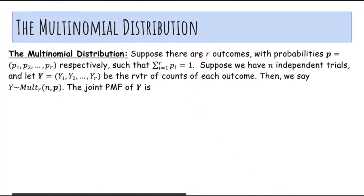Anyway, so in general, suppose that there are outcomes with these probabilities that add up to one. Suppose that you have n independent trials, and let Y be the random vector of counts of each outcome. Then Y is distributed with a multinomial with parameters n and p.